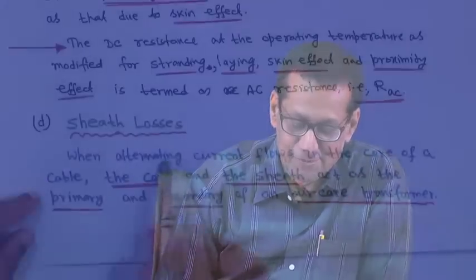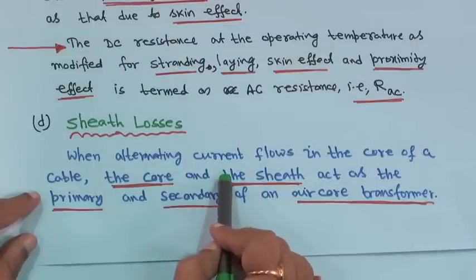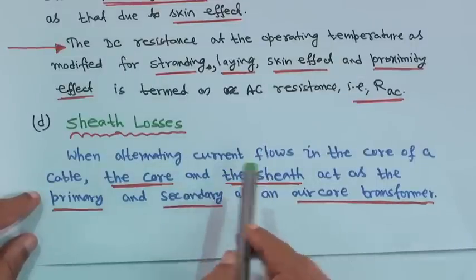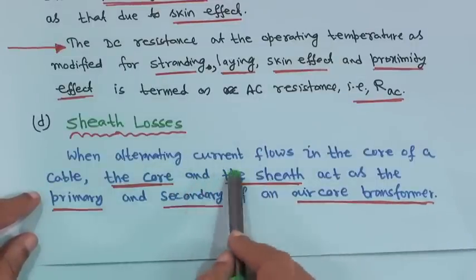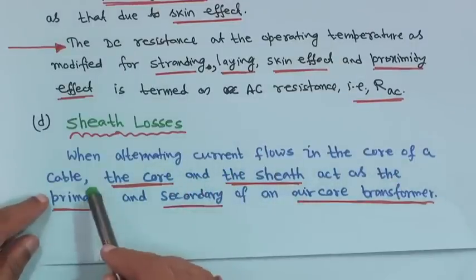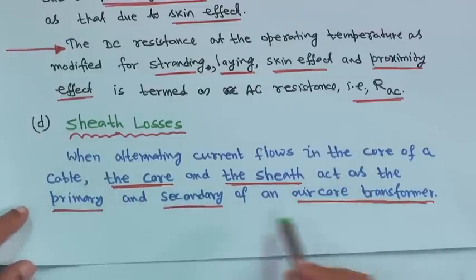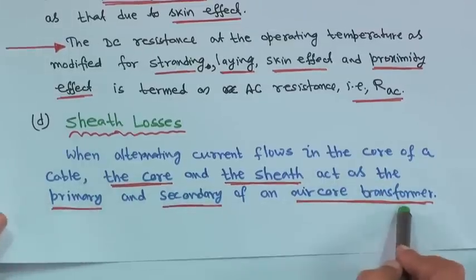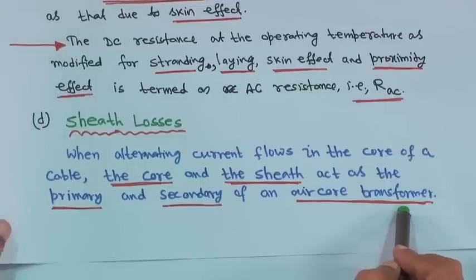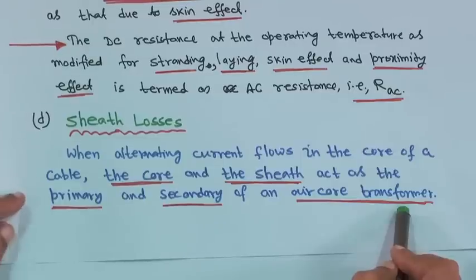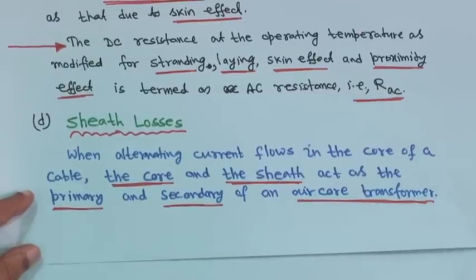Next we will come to the sheath losses. Because in a cable, the sheath is there — either lead or aluminium. When alternating current flows in the core of a cable, the core and sheath act like the primary and secondary of an air core transformer. Therefore, a voltage will be induced in the sheath.